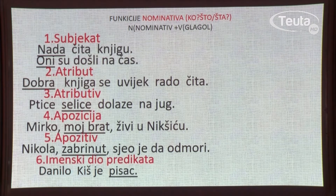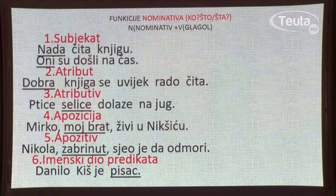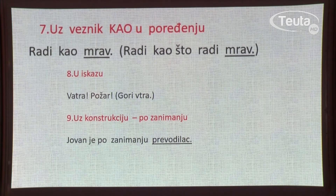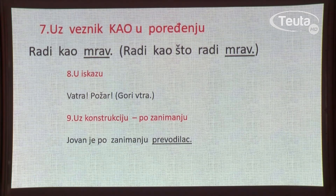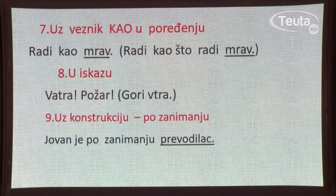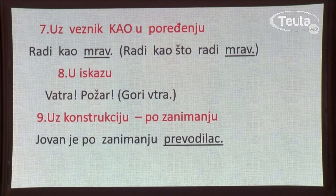Nominativ ima funkciju imenskog dijela predikata: Danilo Kiš je pisac — imenica pisac je u nominativu. Uzveznik kao u poredbenoj konstrukciji: radi kao mrav — također u nominativu. Ili: radi kao što radi mrav — imenica mrav je u nominativu. U iskazu: vatra, požar — također je imenica u nominativu. Uz konstrukcije po zanimanju: Jovan je po zanimanju prevodilac — imenica prevodilac je u nominativu.